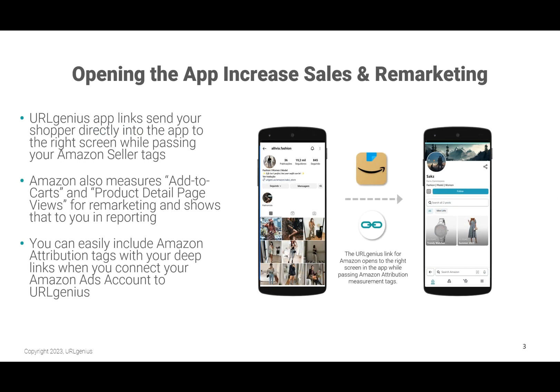URL Genius App Links open the app and send your shopper directly to the right screen in the app while passing your Amazon Seller Tags. Amazon also measures Add to Carts and Product Detail Page Views for remarketing automatically and shows you that information in reporting. You can easily include your Amazon Attribution Tags with your app deep links when you connect your Amazon Ads account to URL Genius.